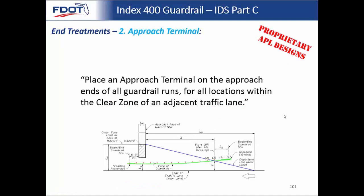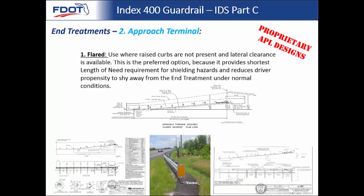The second type of end treatment is the approach terminal. Place an approach terminal on the approach ends of all guardrail runs for all locations within the clear zone of an adjacent traffic lane. The first option is the flared type — use this where raised curbs are not present and lateral clearance is available. This is the preferred option because it provides the shortest length of need requirement for shielding hazards and reduces driver propensity to shy away from the end treatment. By moving the end of the guardrail as far away from traffic as possible, you remove some of that subconscious swerving motion.